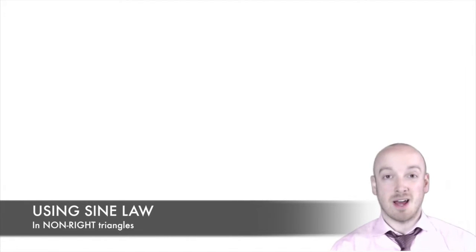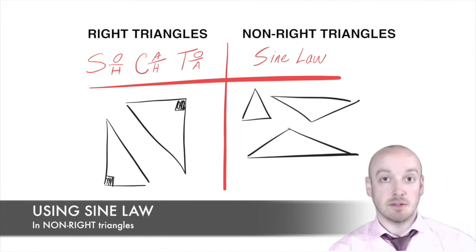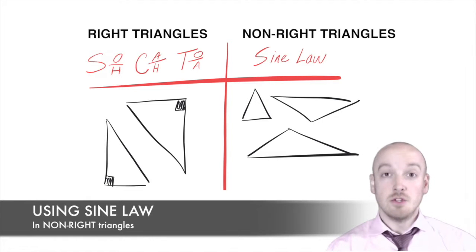Alright, so sine law. What is it and how is it different from SOH CAH TOA? Well, first of all, the sine law is used in non-right angle triangles. Now, technically it could work in right triangles, but there's a couple of cases that you could get stuck with where sine law wouldn't work for you. So your safest bet, use SOH CAH TOA for the right angle triangles and sine law for the non-right triangles.